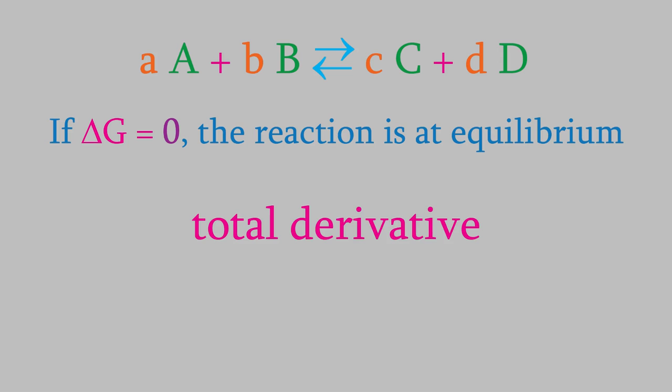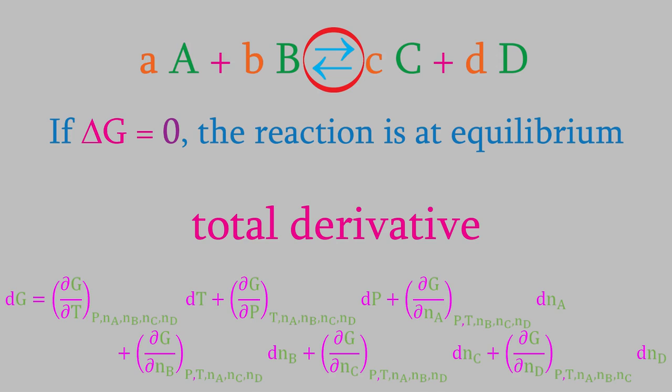We'll start by writing the total derivative of the Gibbs free energy. To do that, we need to think about what the variable parameters of this system are. As we saw when we took the total derivative of G in video 29, two of them are the pressure and temperature. Back in that video, we also had the number of moles of the reactants as variables. However, in that example, we were looking at an irreversible reaction. This time, since the reaction is reversible, we actually need to worry about the number of moles of each of the compounds, no matter which side of the reaction they're on.